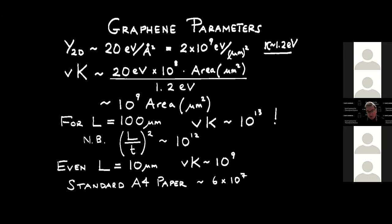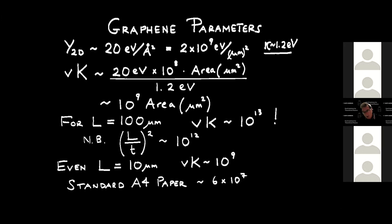By contrast, standard A4 paper has a von Kármán number of order 10⁷. Paper can give some intuition about the behavior of the system, except you have to think about thermalized paper, not zero-temperature paper. What happens when you heat up this graphene sheet? By virtue of the roughness, it's going to be effectively thicker.